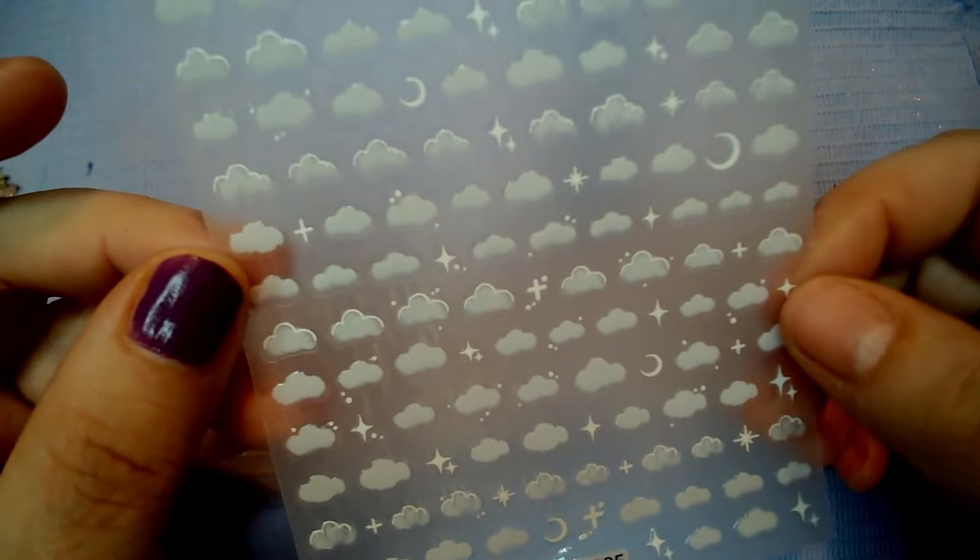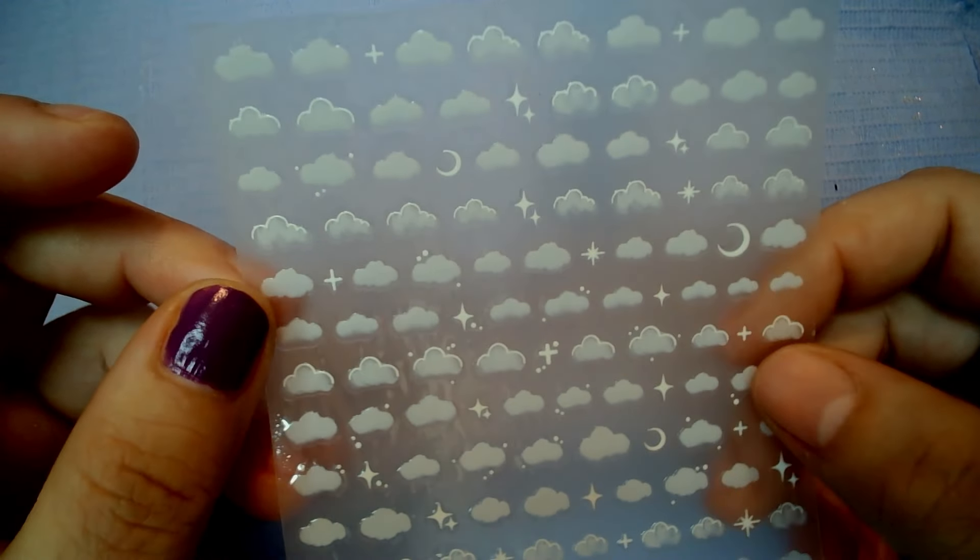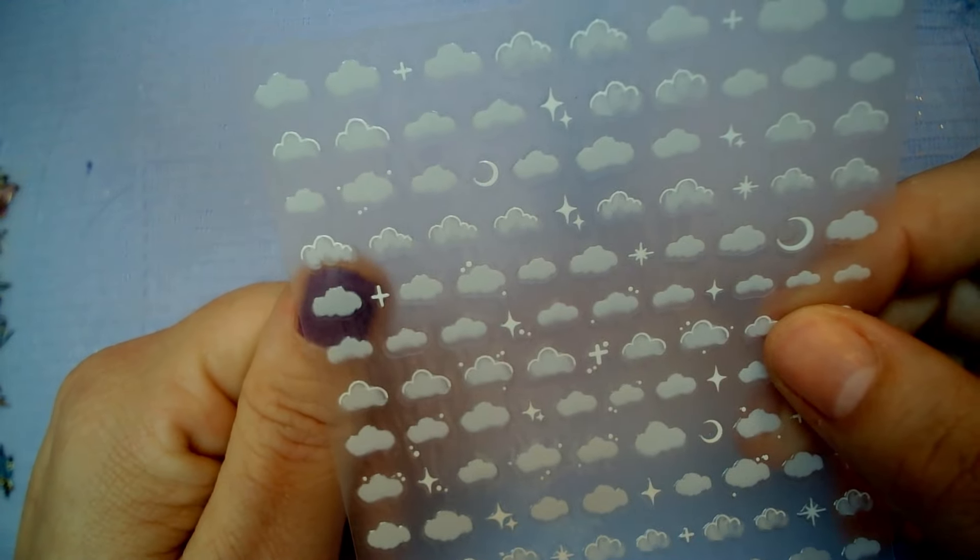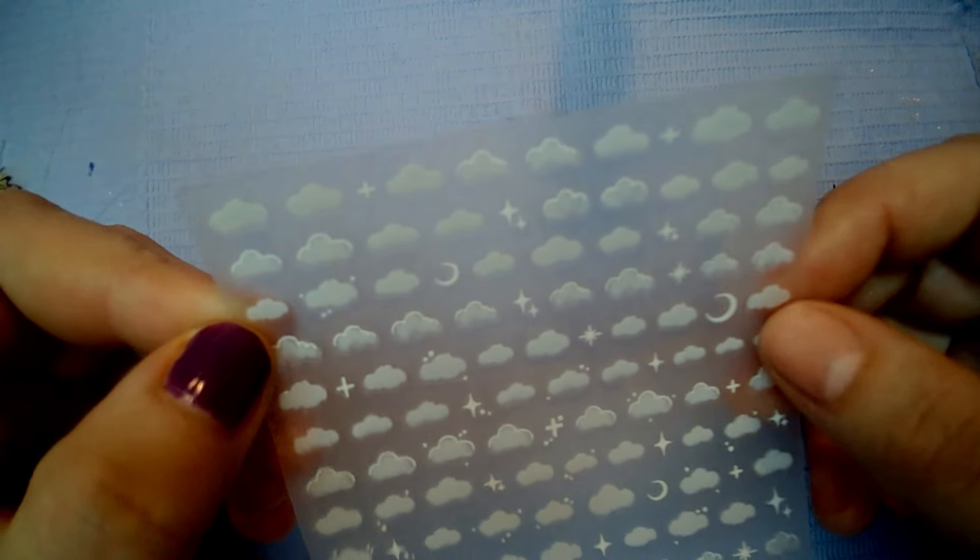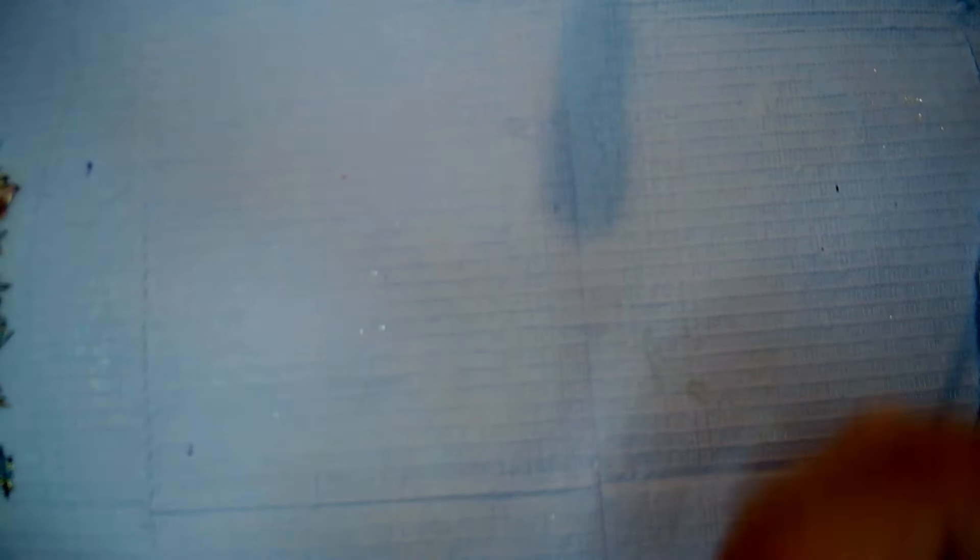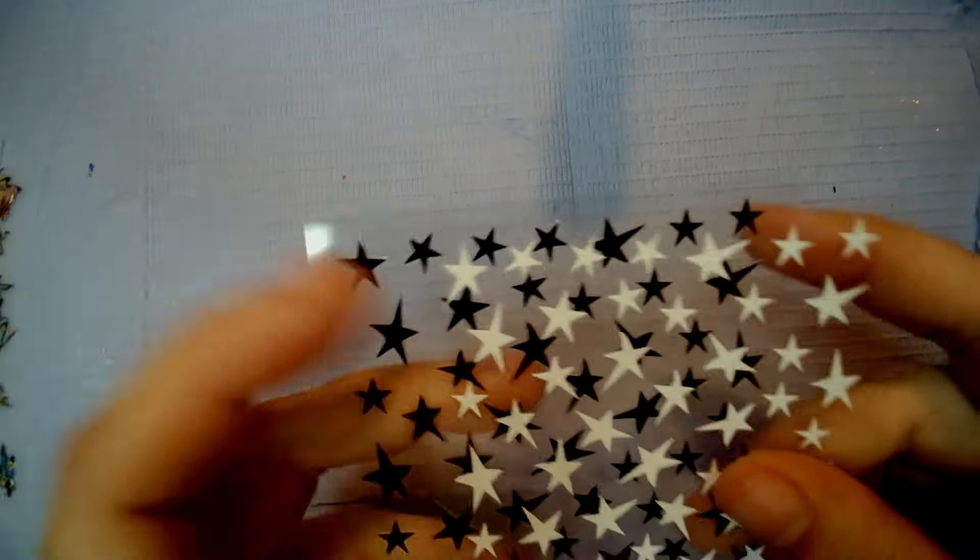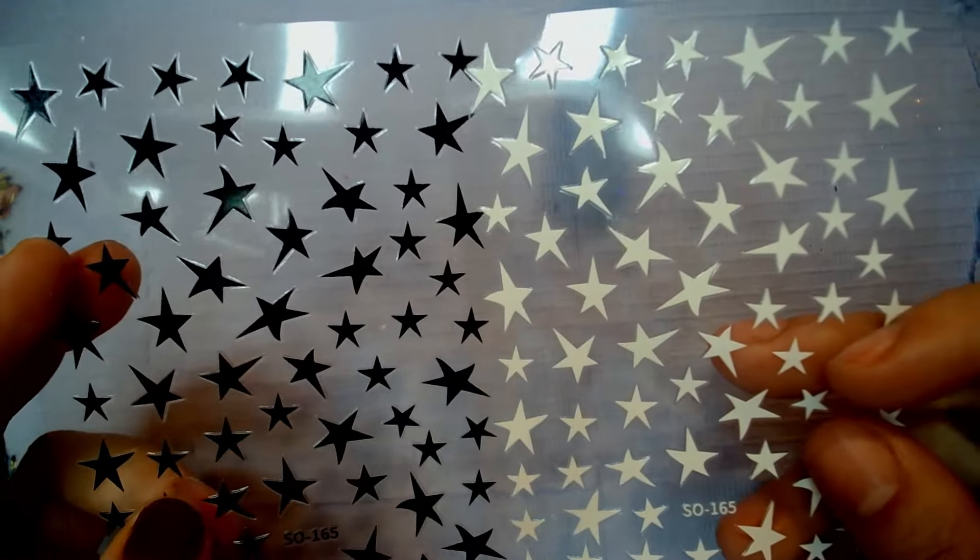Then the next lot of stickers. And there is only one sheet of them. But there is clouds with some little moon and stars. And as you can see, they are nice and little. So, you can put like several on a nail. Then the next set of stickers.